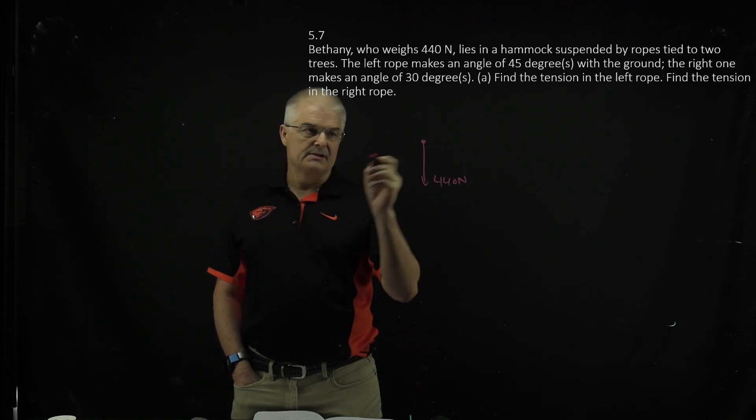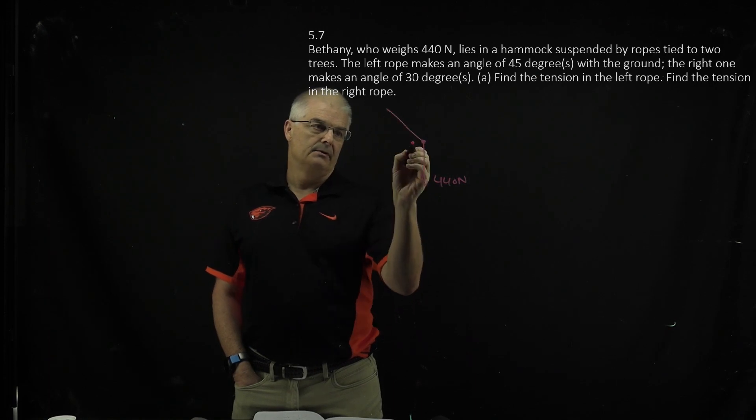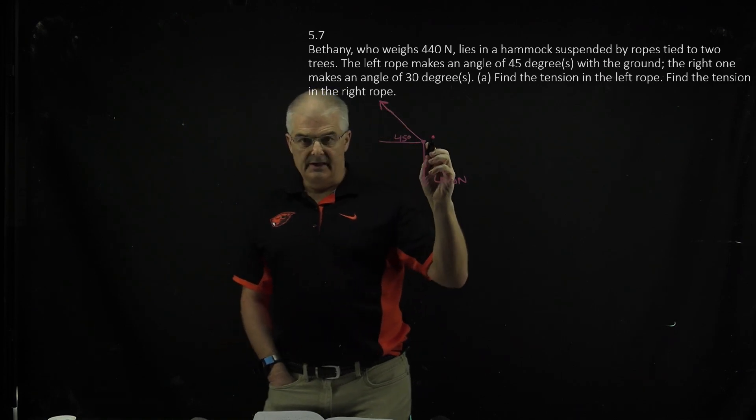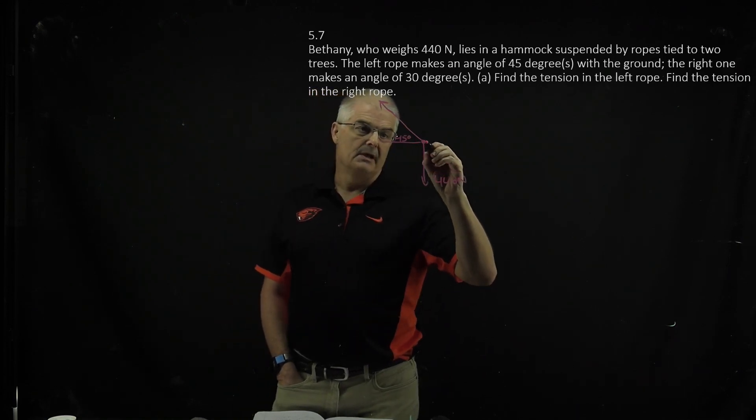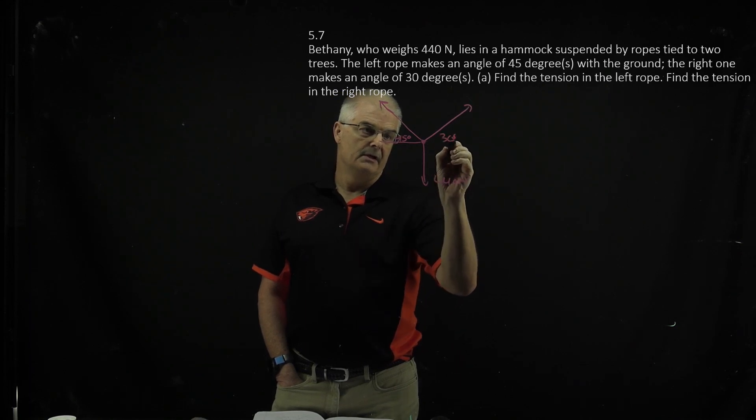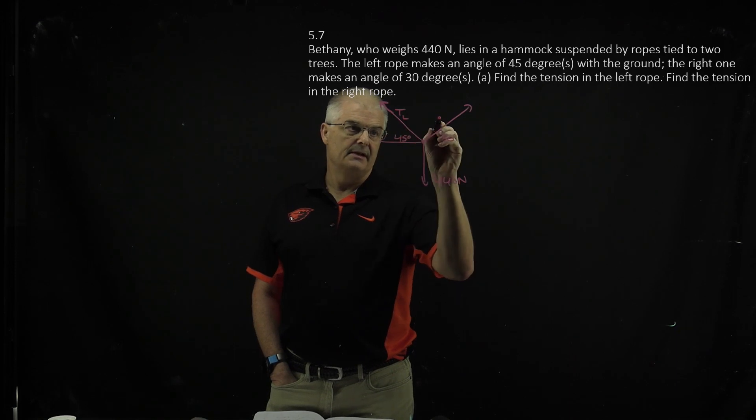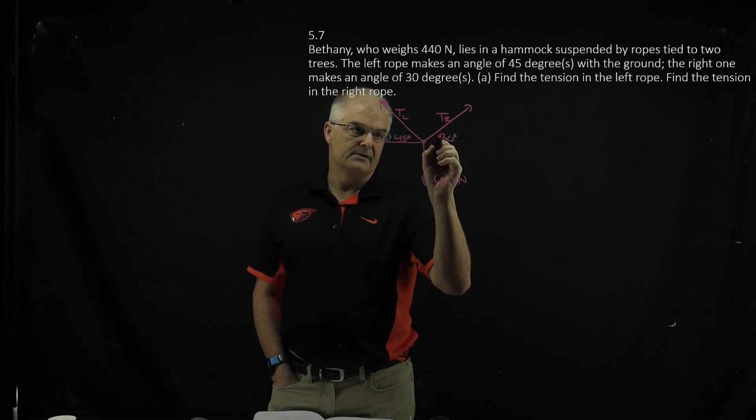The left rope makes a 45 degree angle, so this is 45 degrees, and that's the tension here. And then the right one makes 30 degrees. We're going to call this tension on the left side, and this is tension on the right side.